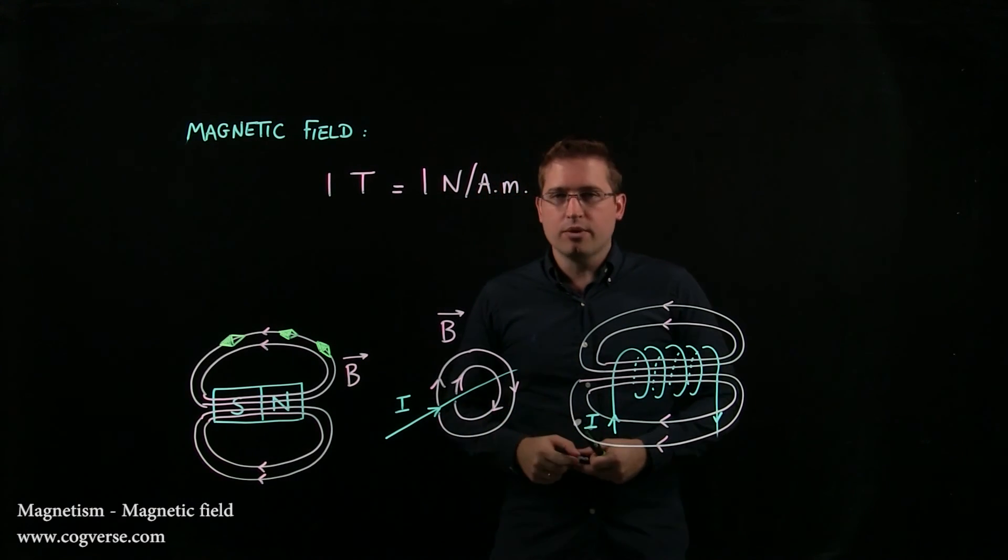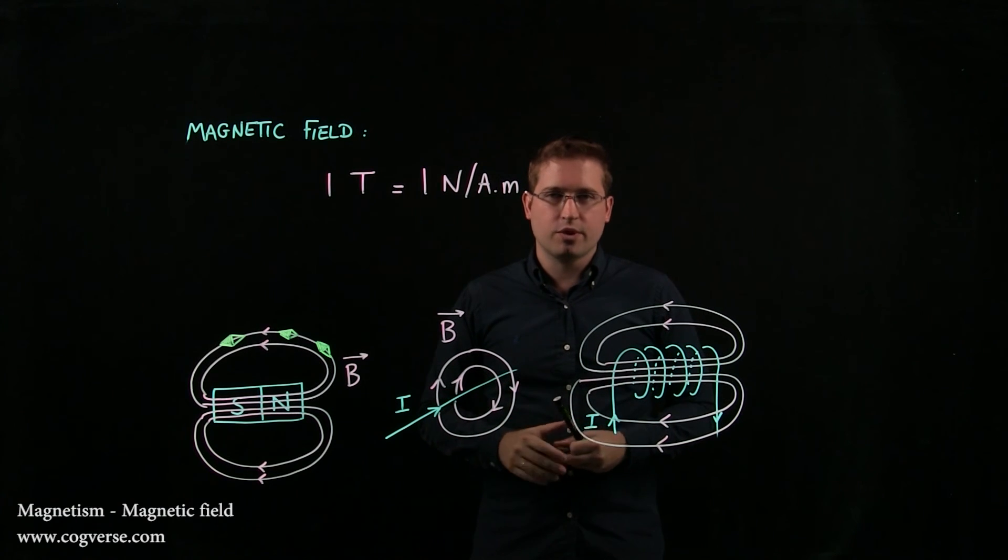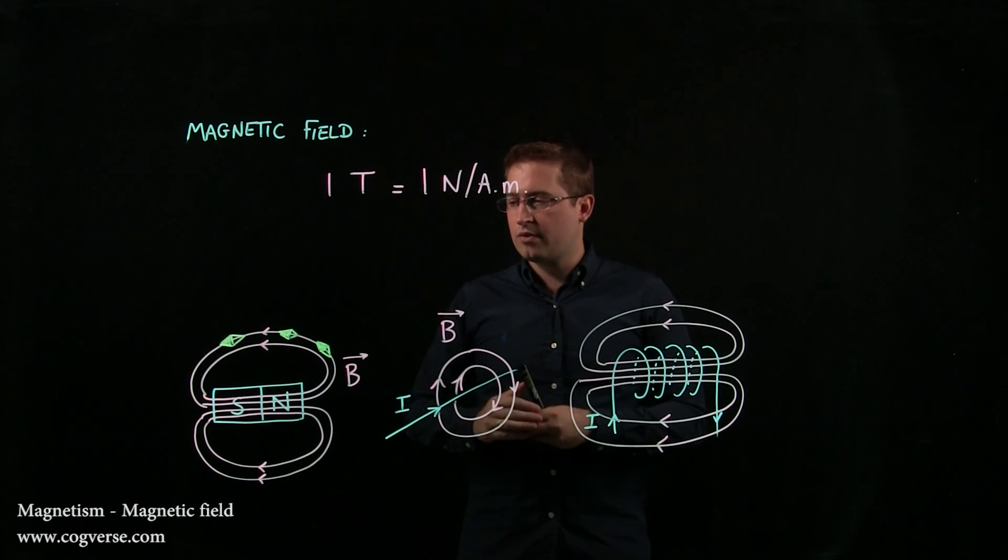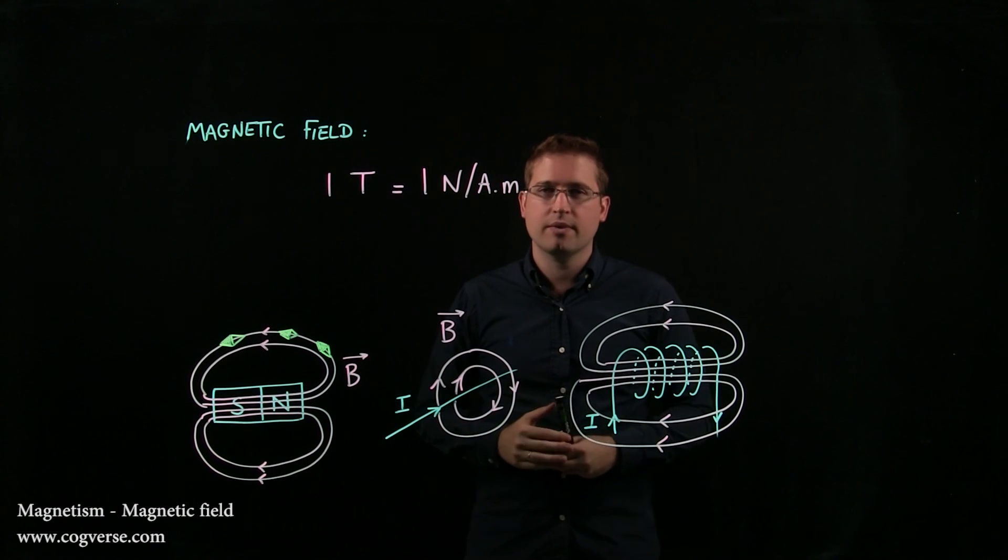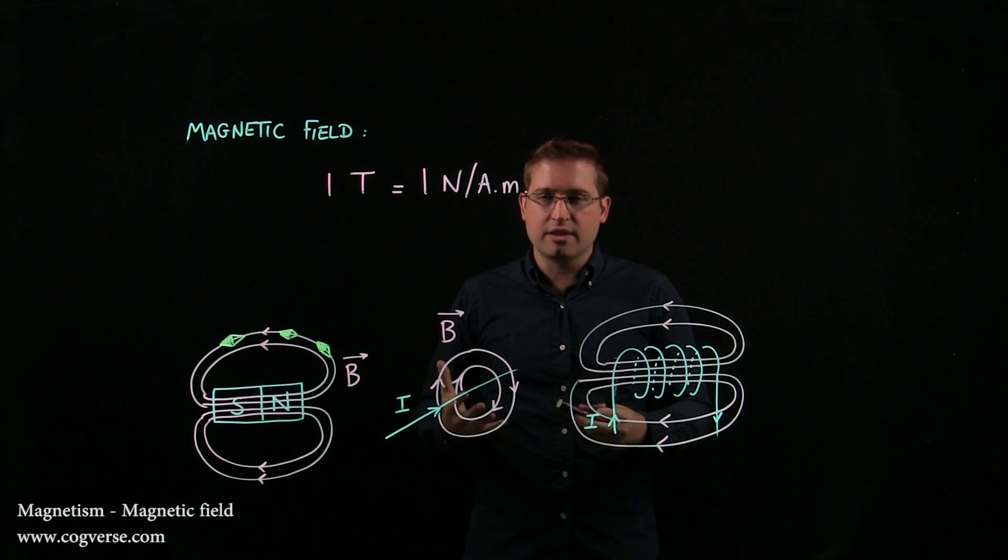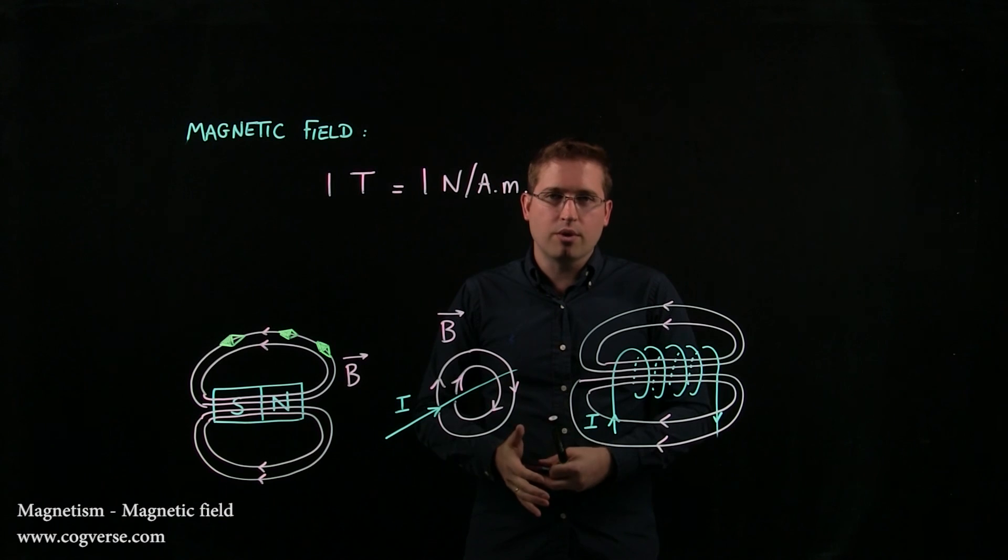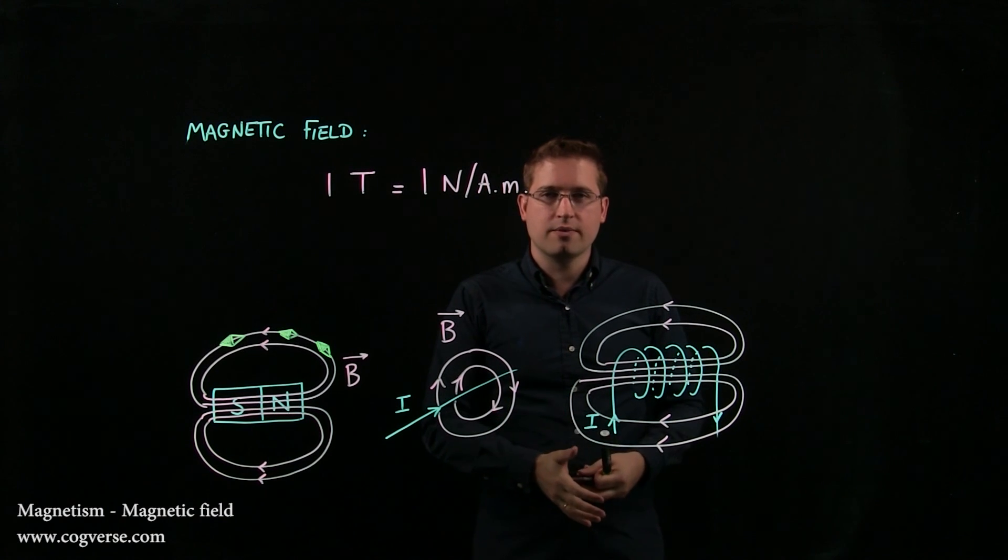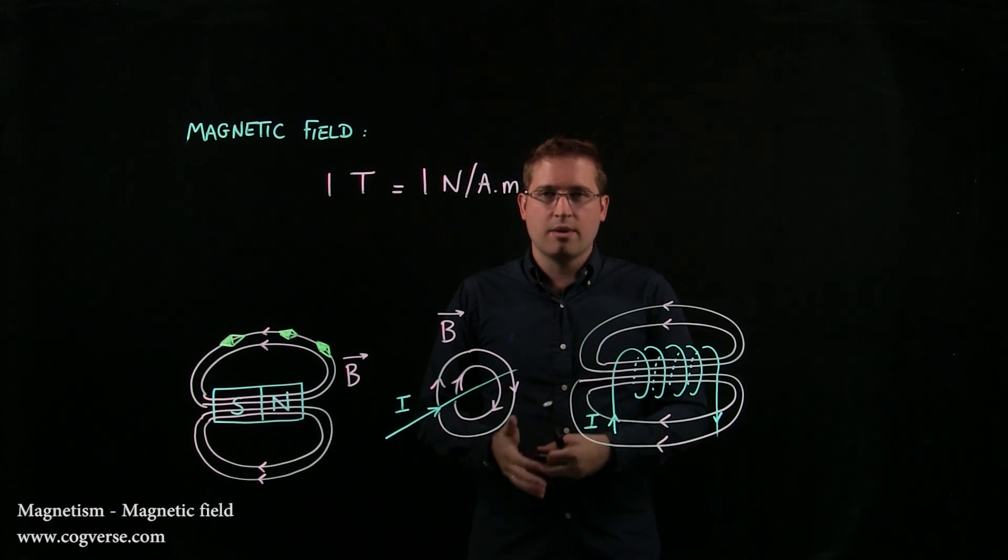So two things to remember. Magnetic field lines are different than electric field lines. They're always tangent to the magnetic field, but they're closed. And the magnetic field itself can exert a force on a charge that moves in it. And that's the magnetic force that we'll define in a bit.